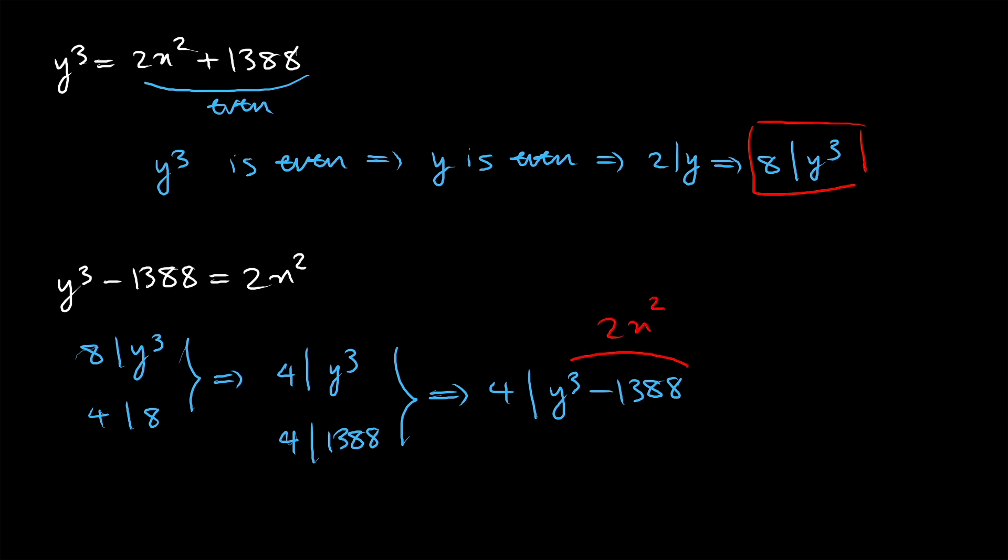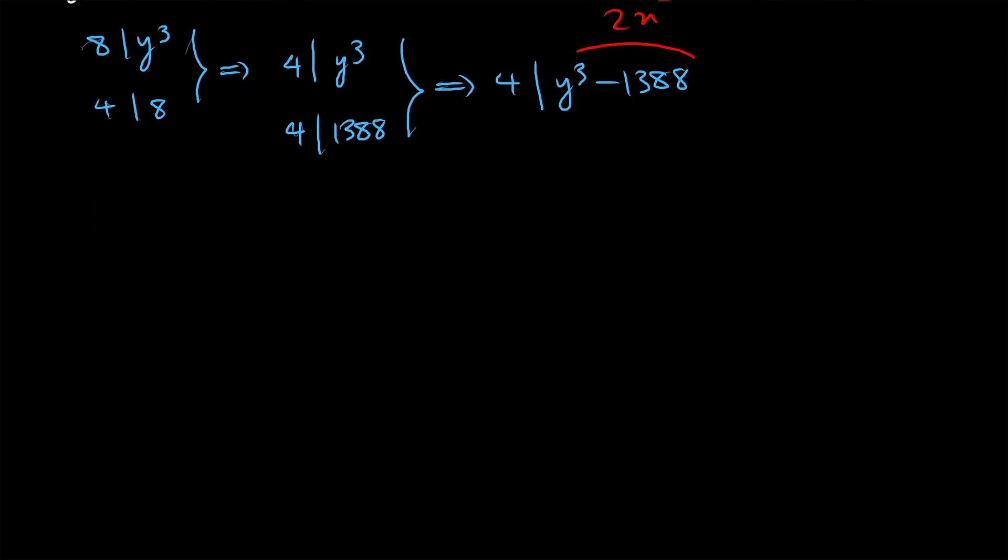So from this I can say that 2 divides x squared which means that x squared is even, and from this I can say that x has to be even as well because again if x was odd then x squared would have been odd as well. Next I can square both sides to get 4 divides x squared and let's multiply both sides by 2 to get 8 divides 2x squared.